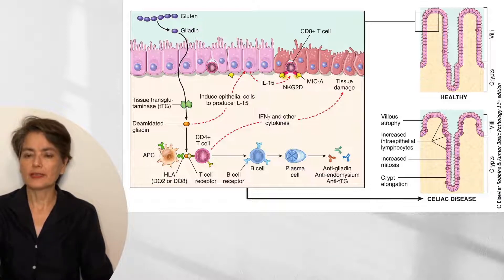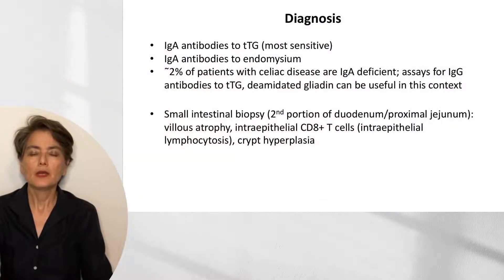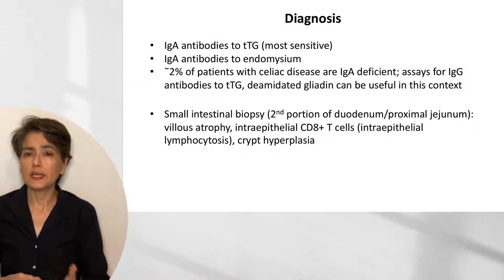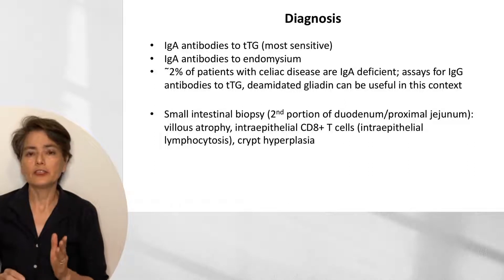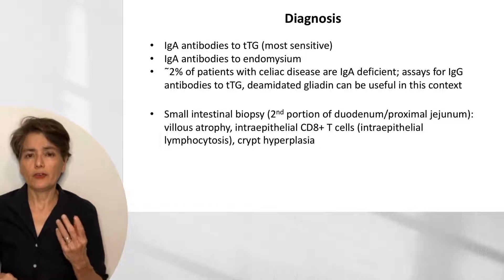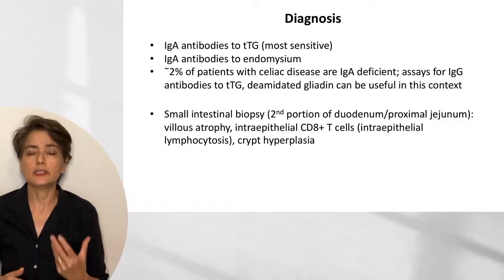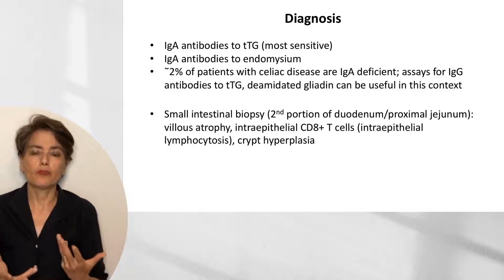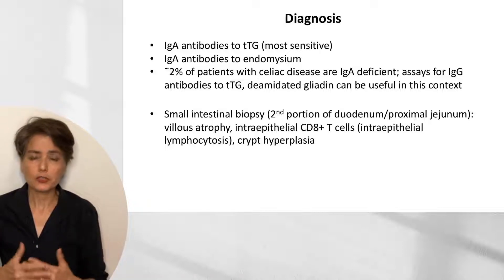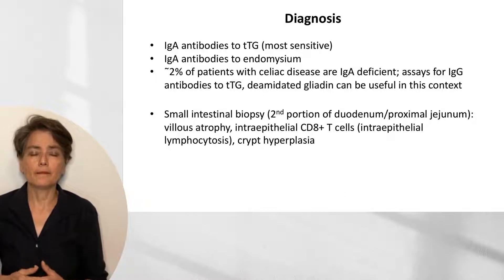Before looking at histology, let's think about how we make this diagnosis. If you have a patient presenting with symptoms suggestive of celiac disease, your first step is not a small intestinal biopsy — it's serologic testing. The first-line test will be looking at IgA antibodies to tissue transglutaminase, which is our most sensitive assay. IgA antibodies are secreted on the mucosa, making them strongest in this setting.